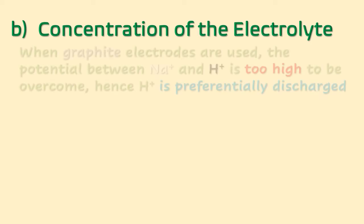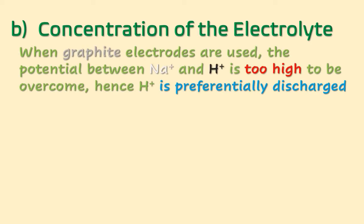During electrolysis of brine, when we use graphite electrodes, the potential between sodium ions and hydrogen ions at the cathode is too high to be overcome, so hydrogen ions are preferentially discharged rather than sodium ions.